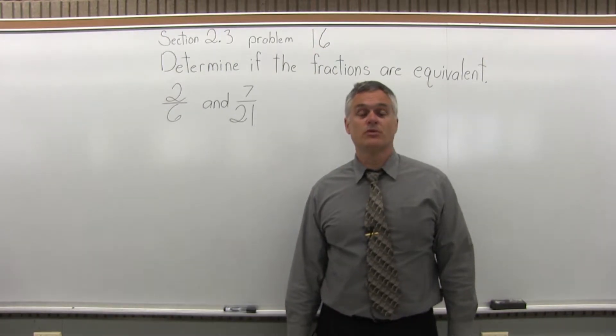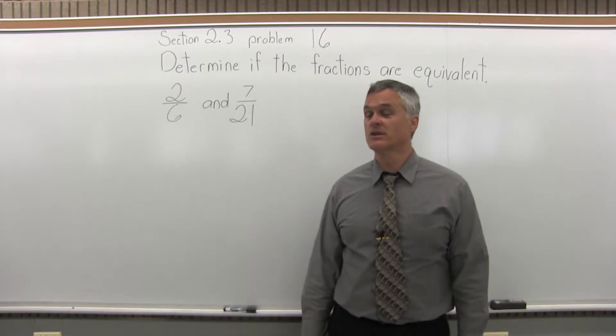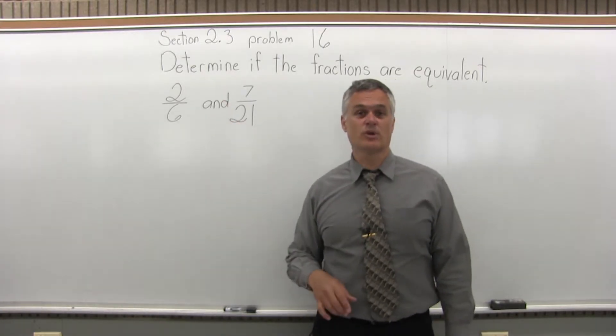This is Section 2.3, Problem 16. It says, determine if the fractions are equivalent. We have two fractions, 2 over 6 and 7 over 21.